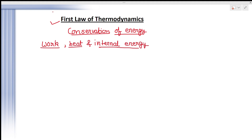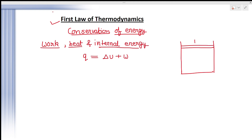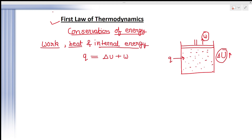In general we write q = ΔU + W. Suppose we have a cylinder with a gas inside and a piston fitted in it. We provide heat to this system — the gas particles will move randomly, meaning their internal energy increases. At the same time, some work may be done by the system. The work done plus the increase in internal energy equals the heat provided.